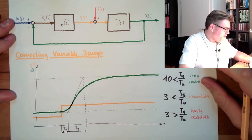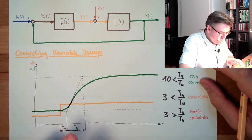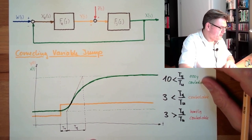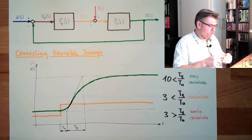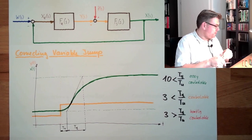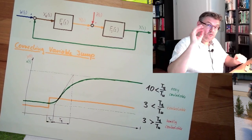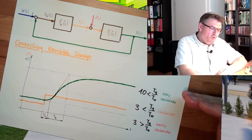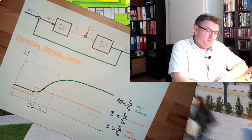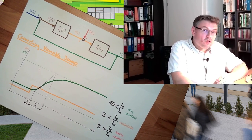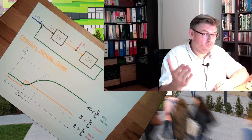In this example I've drawn here, counting one, two, three, we are pretty close to the threshold where it is hardly controllable. But notice something: it's not written 'not controllable.' There is nothing like 'not controllable.' The more difficult it gets, the more sophisticated the controller needs to be — but it's not not controllable. It's difficult to control, but not uncontrollable.